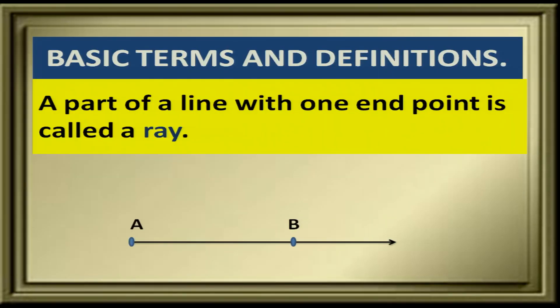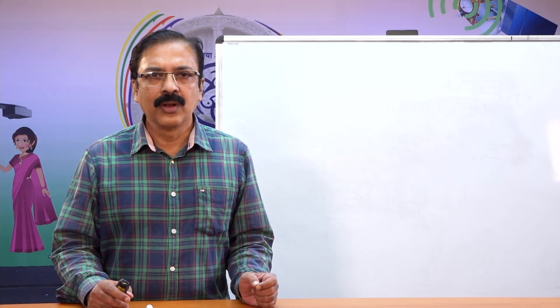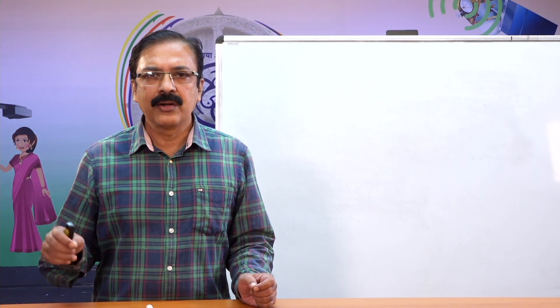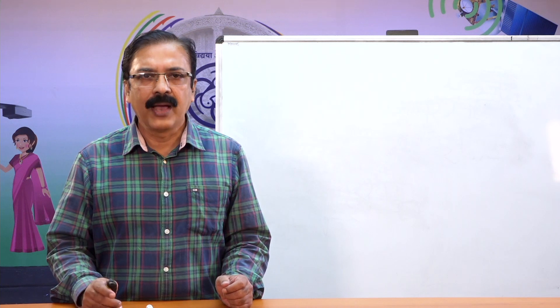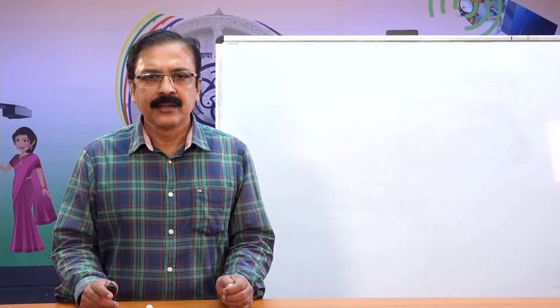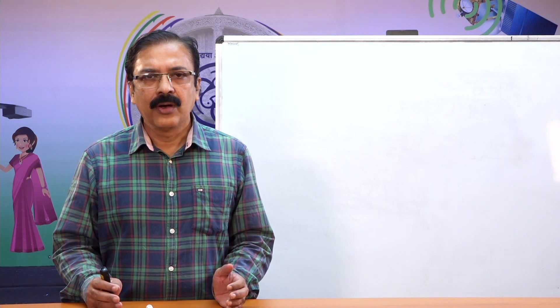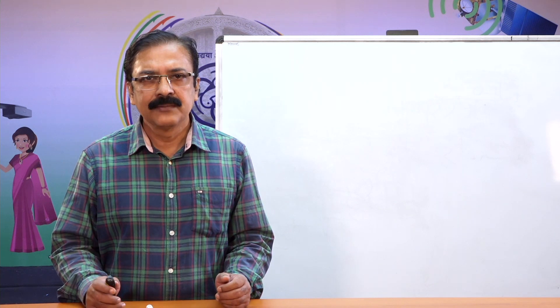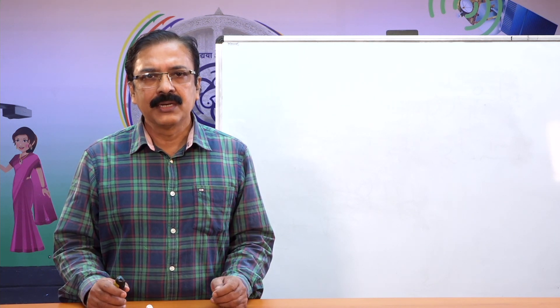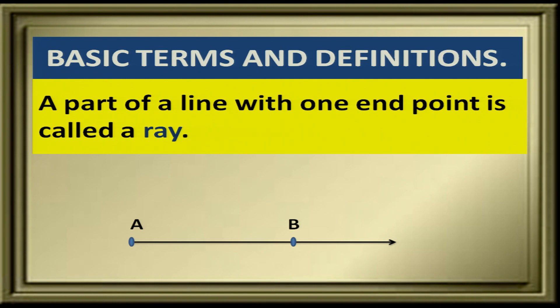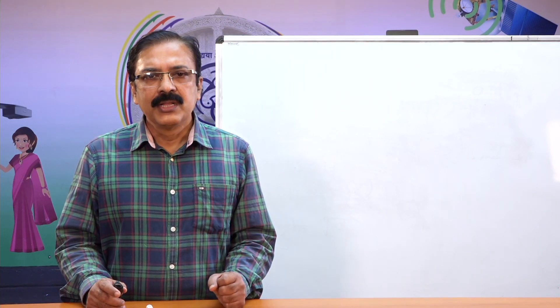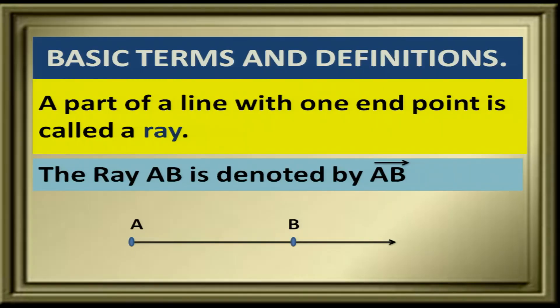A part of a line with one end point is called a ray. That means, if we start from a point along the ruler and go on drawing onwards infinitely, then we get a ray. On the plane we are dealing with, we represent the ray with an arrowhead at one end. The ray AB is denoted by AB with a single arrowhead upon it.